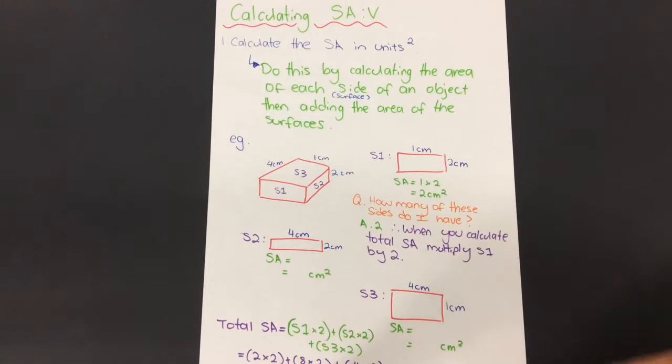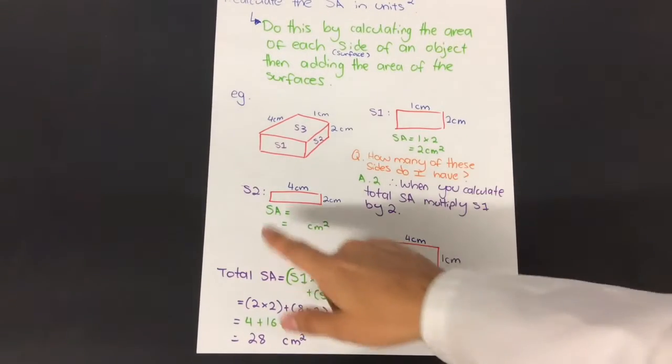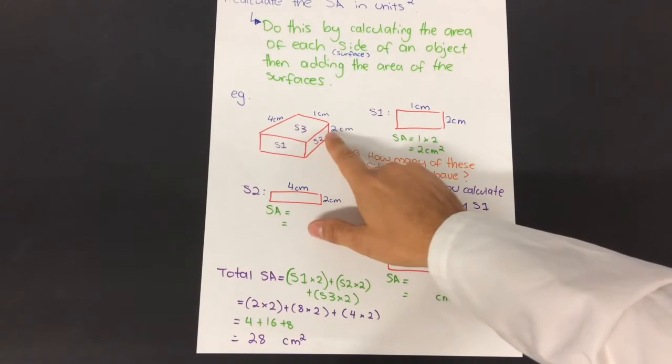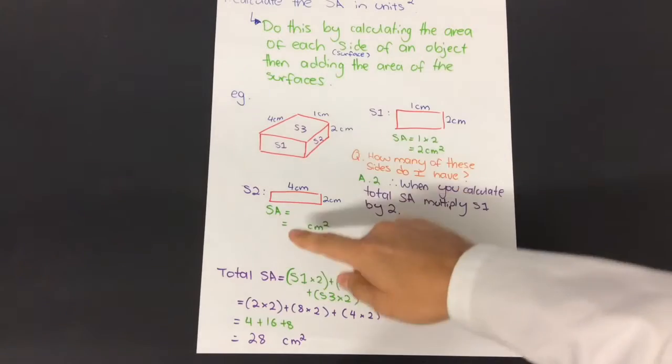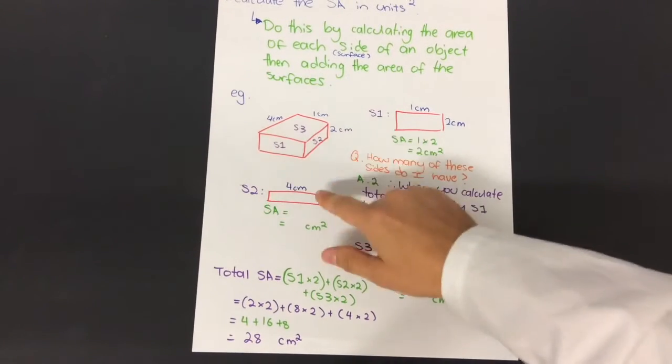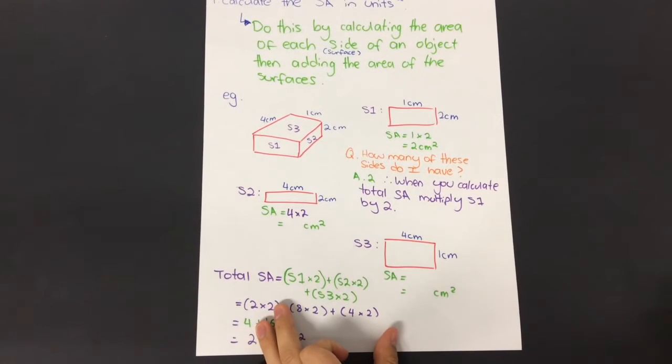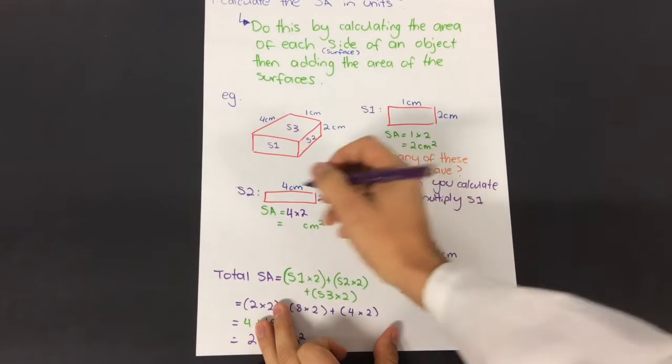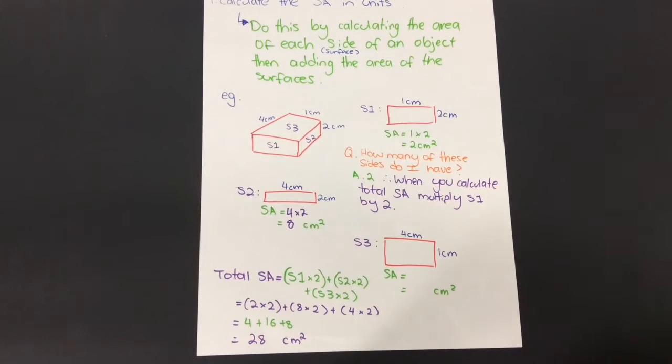Now I'm going to look at surface two, this one here. Let's calculate the surface area together. I have the dimensions of four centimeters by two centimeters. I need to multiply those two together. Four by two is eight, so that gives me eight centimeters squared.